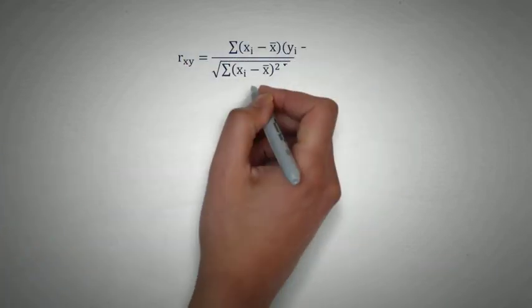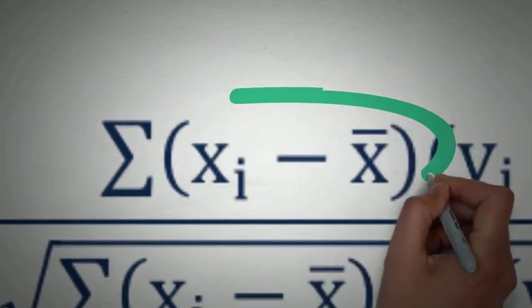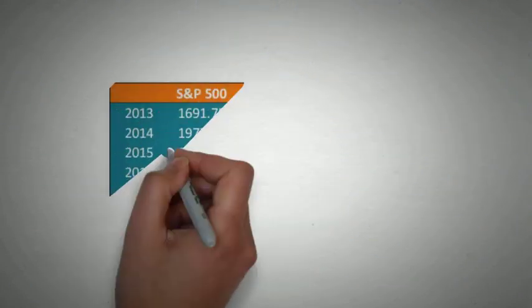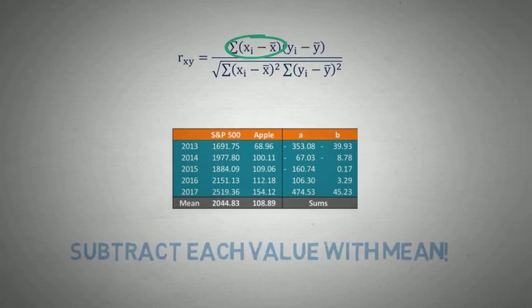So now as a second step we subtract each value with the mean. We do it because in our formula we have xi minus x bar, which means xi is our each independent value and x bar is our mean. Similarly for yi and y bar.